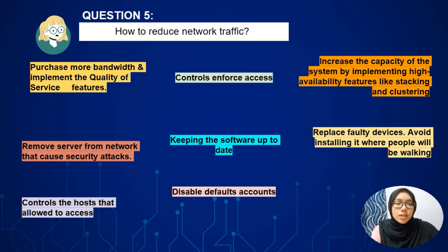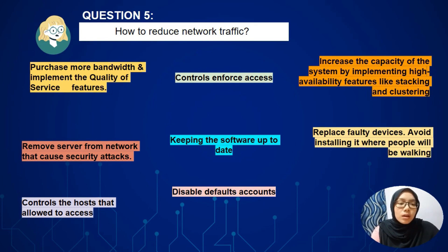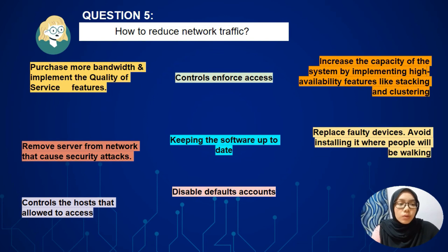Now, we move to the last question: how to reduce network traffic? There are some suggestions that can be applied to reduce network congestion. First, you can purchase more bandwidth and implement quality of service features. Second, we can remove servers from the network that cause security attacks. We can also control the hosts that are allowed to access, which will prevent security attacks, and we can filter cookies. Fourth, we can control the NAS. We also need to keep software up to date to prevent misconfiguration. We can also disable default accounts. Additionally, we can increase the capacity of the system by implementing high availability features like stacking and clustering. We can also replace faulty devices. The last one is to avoid installing cables where people will be walking.